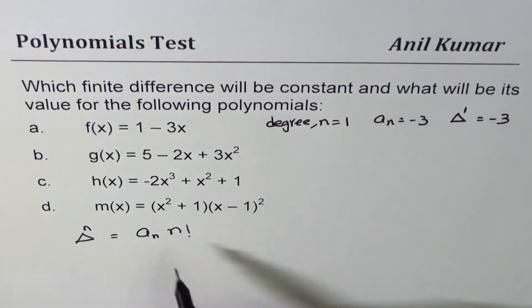a_n is minus 3, n is 1. So get your result. Perfect.